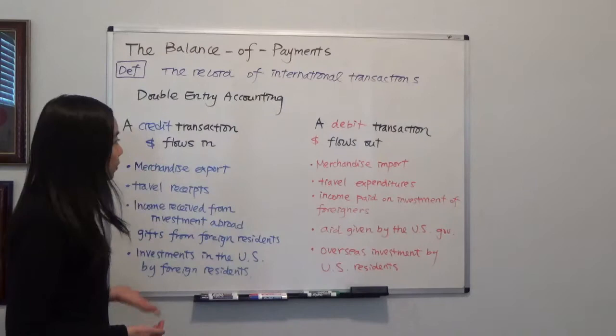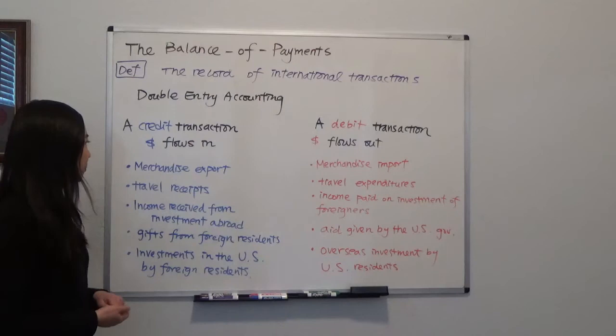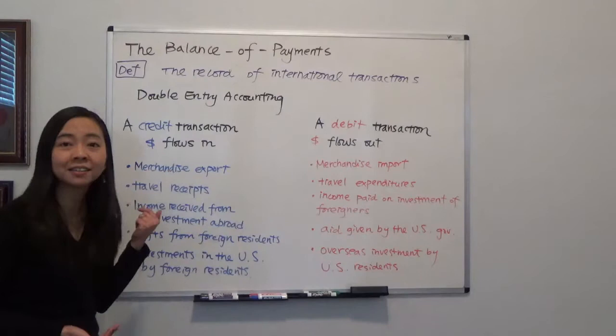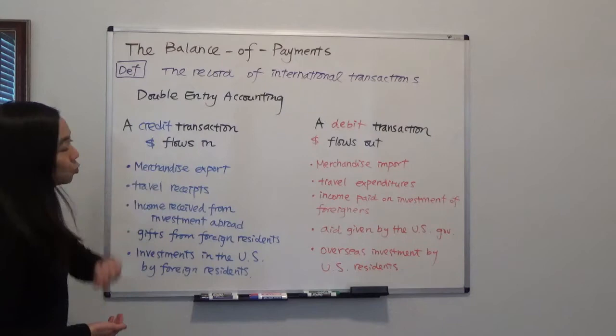What are some examples of credit and debit transactions? For credit transactions, the first example is merchandise export. For example, when we're selling our pharmaceutical products to Mexico and the Mexicans pay us for that merchandise, money flows in from Mexico to the United States. So that will be a credit transaction.